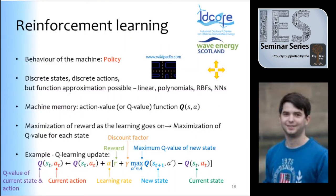This behavior of the machine is called a policy in this framework. With the Pac-Man example you have discrete states and discrete actions. But there is function approximation — linear, polynomials, neural networks, radial basis functions — and that's fundamental because otherwise it's not really applicable to a control problem. Memory is also really important: if the machine does not remember what it did in the past, there's no way it's going to learn what it should do in the future.